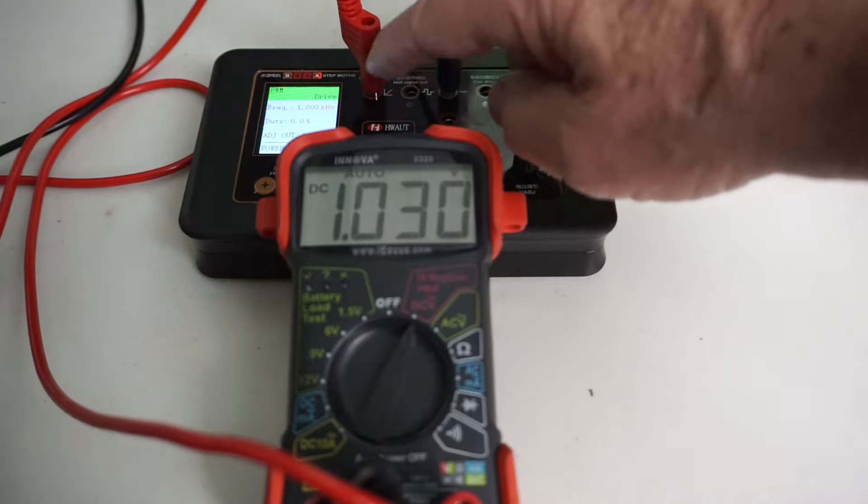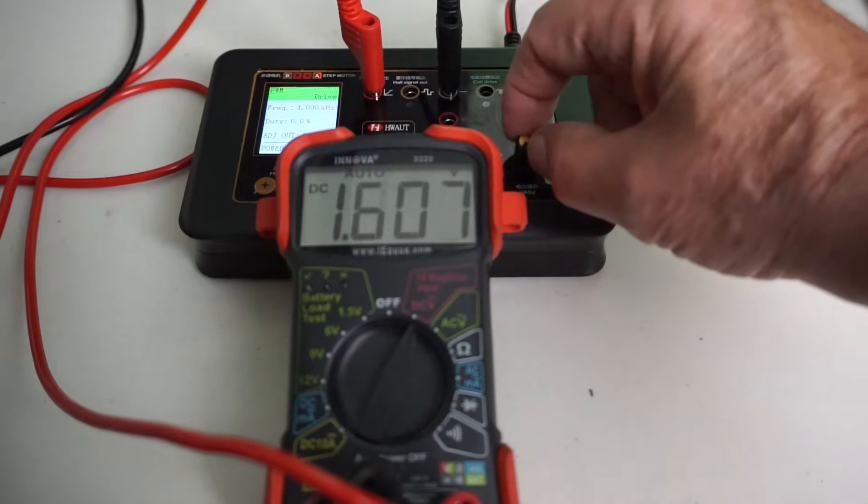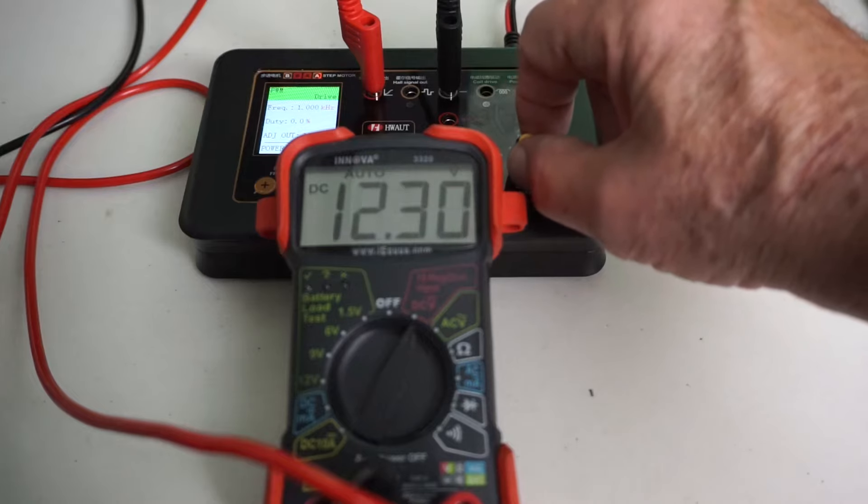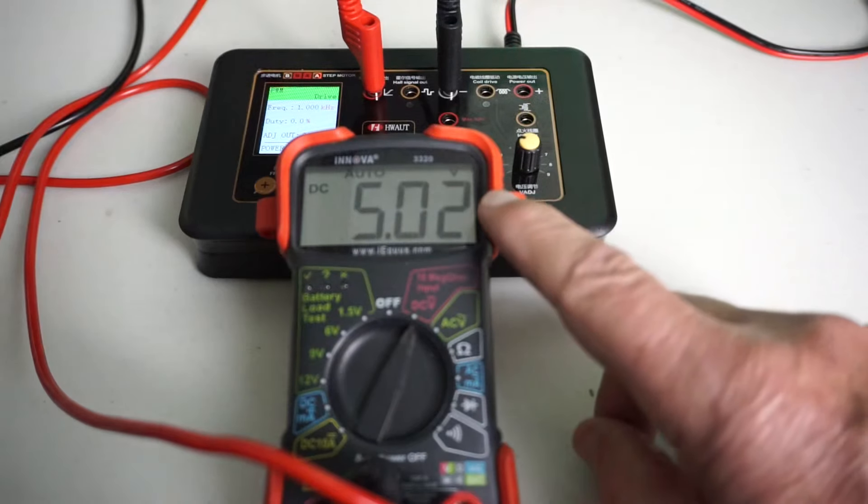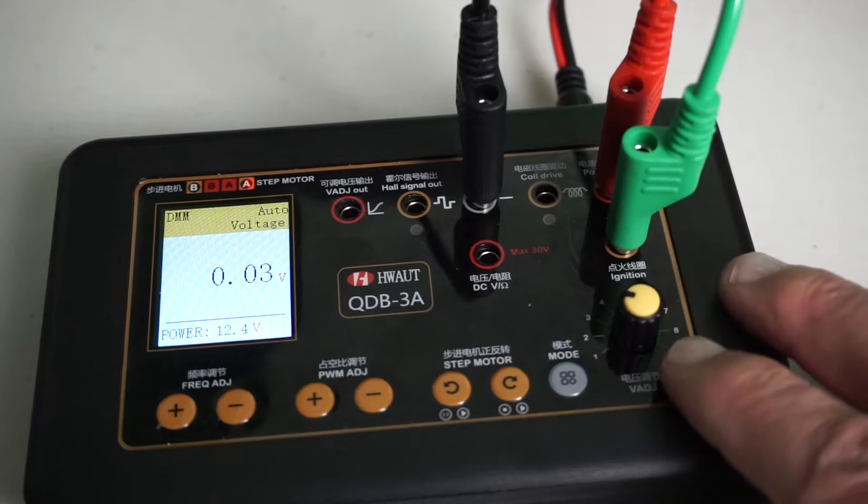These two pins give us adjustable voltage controlled by here. It goes from like 1 volt right up to battery voltage. An example of this is that you could use it as a 5 volt reference when bench testing sensors. OK, let's pick things up a little bit here.